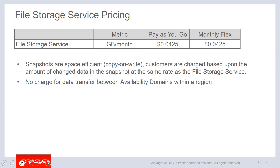Pricing for file storage is straightforward and transparent. It's four and a quarter cents per gig per month, billed on an hourly basis for the amount of space actually consumed. So if a customer loads one terabyte — a thousand gigabytes — and leaves that data on the system for only a couple of hours, the charge would be prorated at 4.25 cents per gig times a thousand gigabytes divided by the number of hours actually consumed. Best of all, there's never any charge for data transfer between availability domains within a region, unlike some competitors. All data transfer within a region is always free.